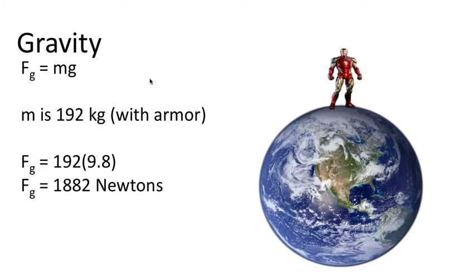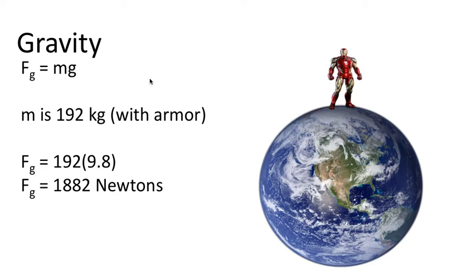By the way, in order to get a newton, mass always has to be in kilograms, and acceleration has to be in meters per second squared. In significant digits, 1900 newtons. So the Earth attracts the character with a force of 1900 newtons.